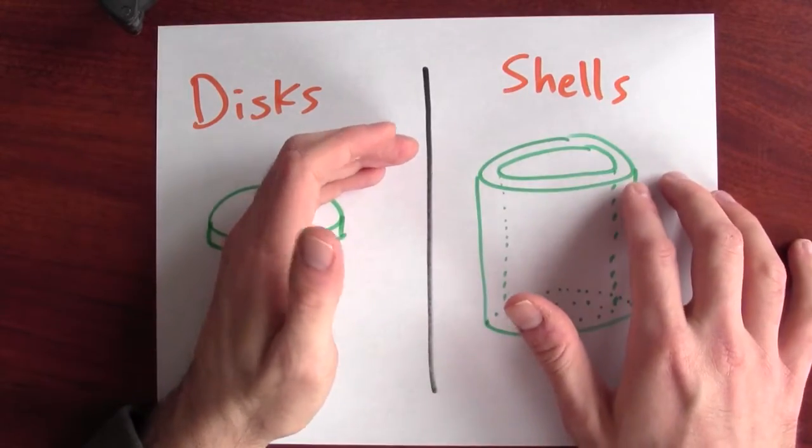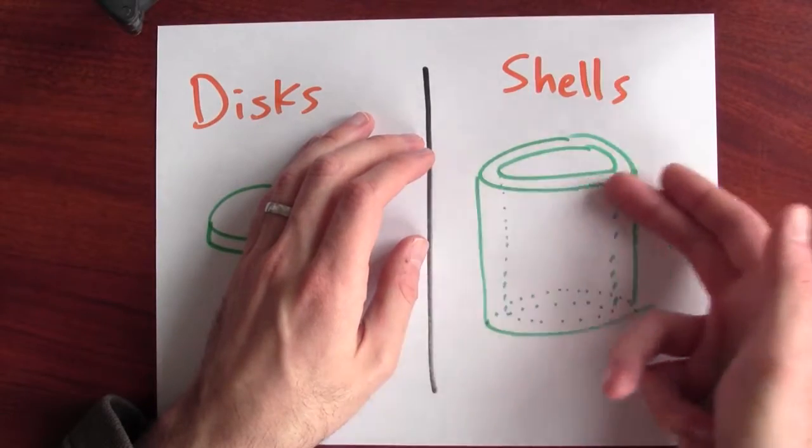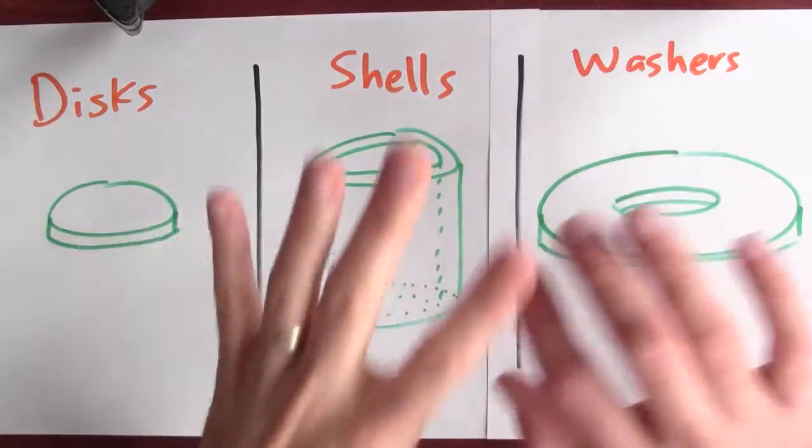This shell thing is supposed to be like a cardboard mailing tube. It's a cylinder, sort of a thin wall. But how are shells different from washers? Well, there are some similarities.